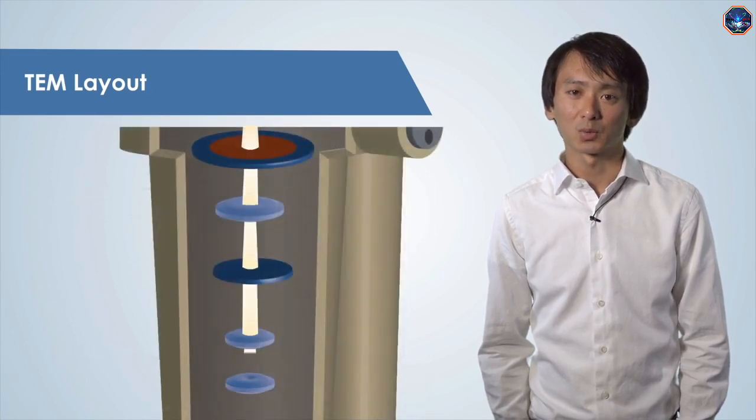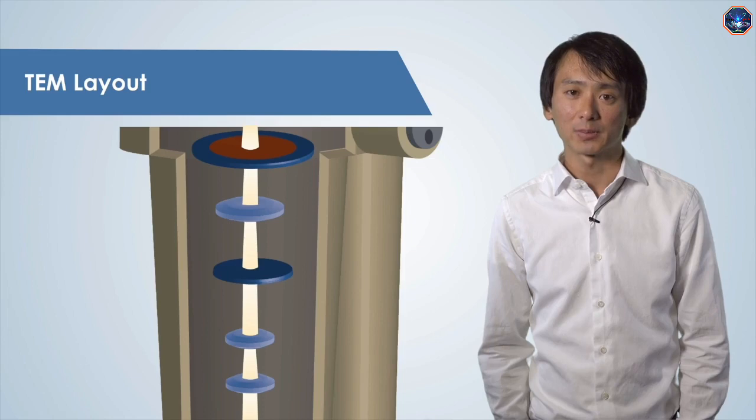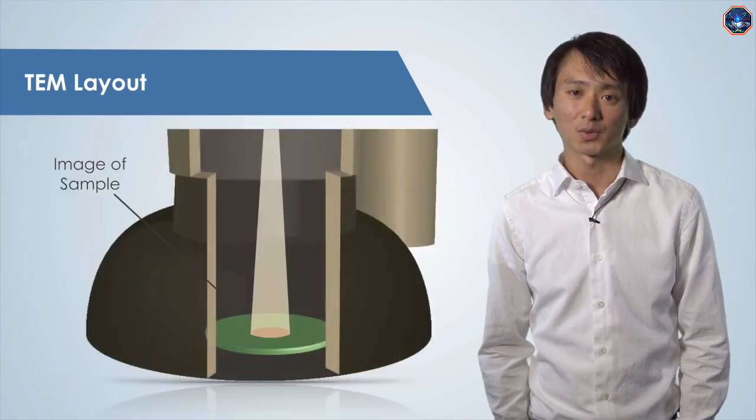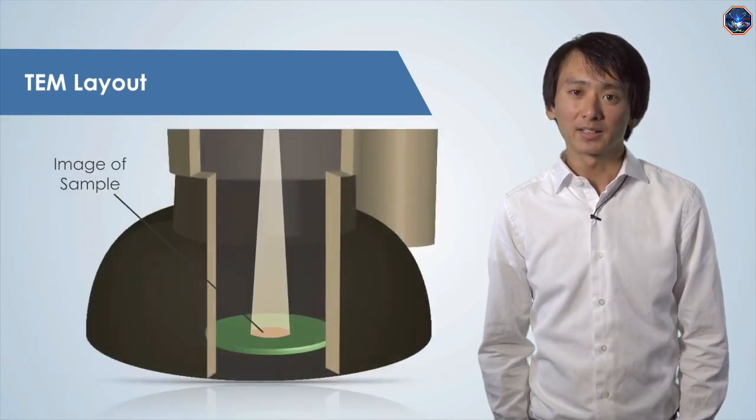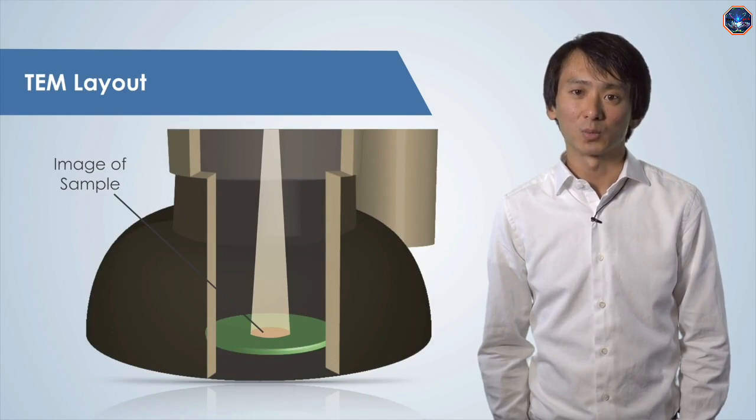The transmitted electrons will travel through another set of lenses and apertures and be projected onto a phosphorescent screen. This screen produces photons when the beam hits it, which allows us to see the sample. In order to capture an image of the sample, the screen must be removed so the electrons can be collected using a piece of film or digitally using a camera.